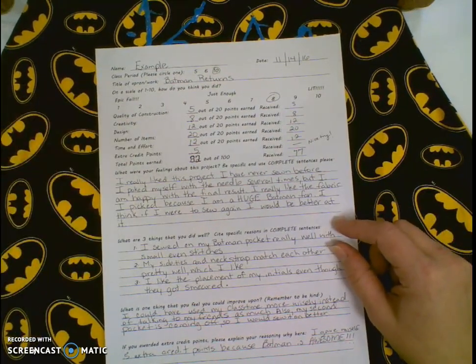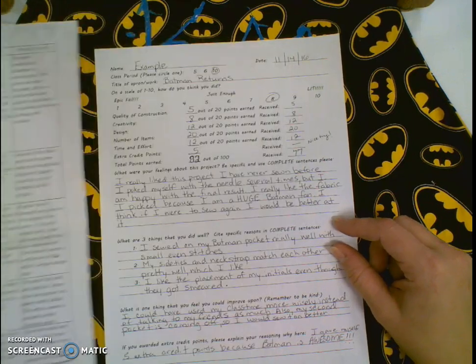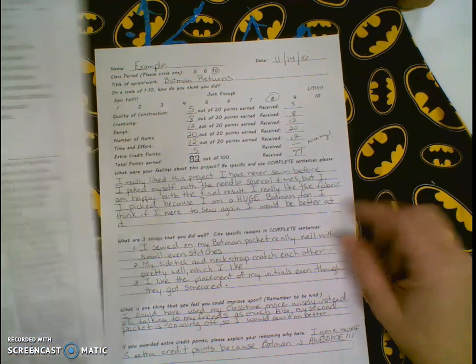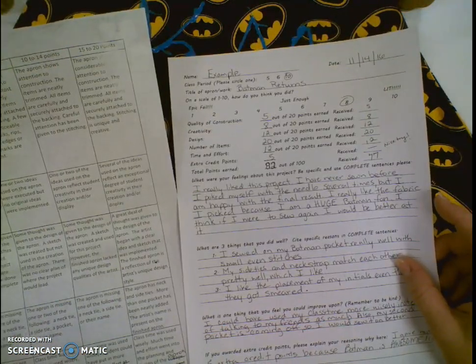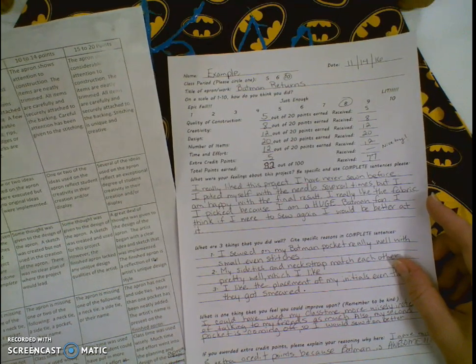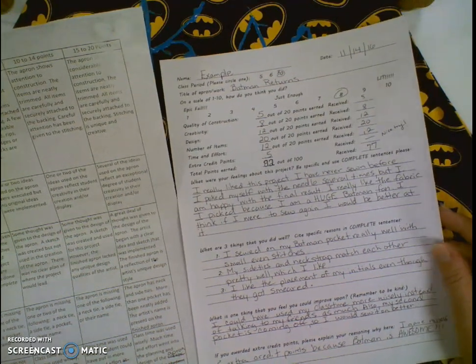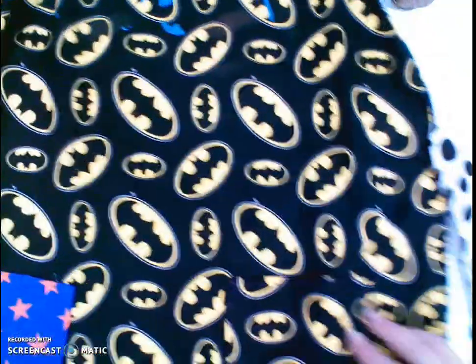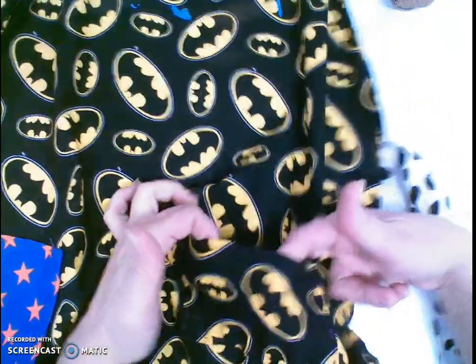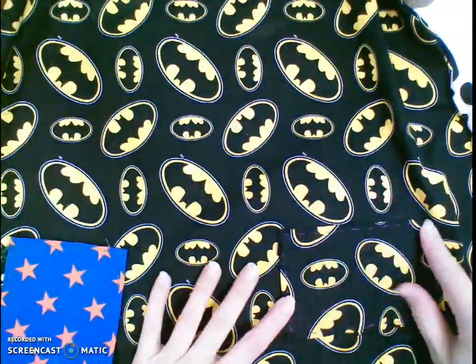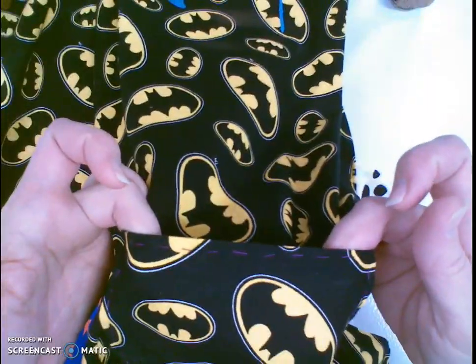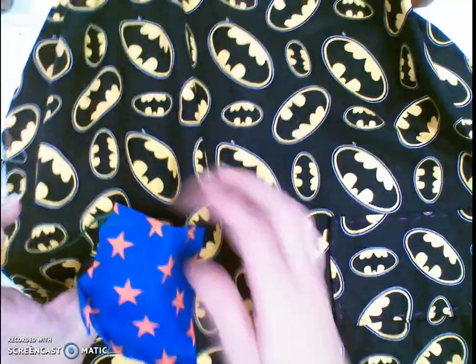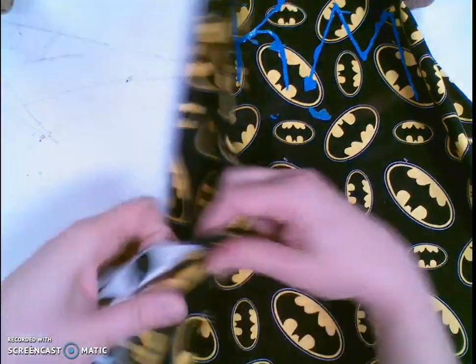Grade yourself based on the rubric. Quality of construction - this person gave themselves a five. It says the apron shows some attention to construction, most items are neatly added, most items are securely attached to the backing. A few barely noticeable stray marks, rips, uneven edges are present. Let me explain why that happened. As you can see, this pocket is securely attached, so that's really well done. They hemmed the top which you want to do, they've used really neat small stitches to do that.